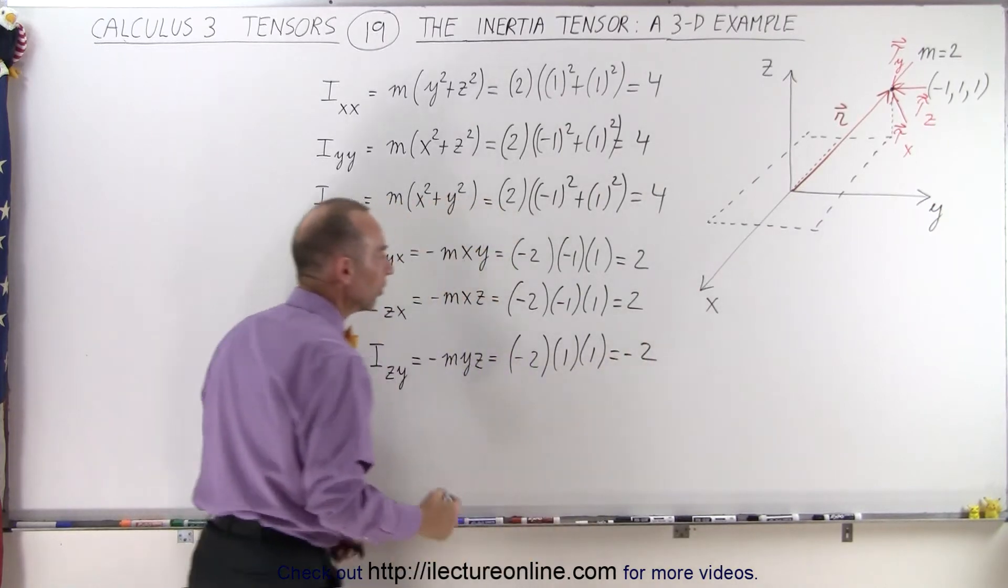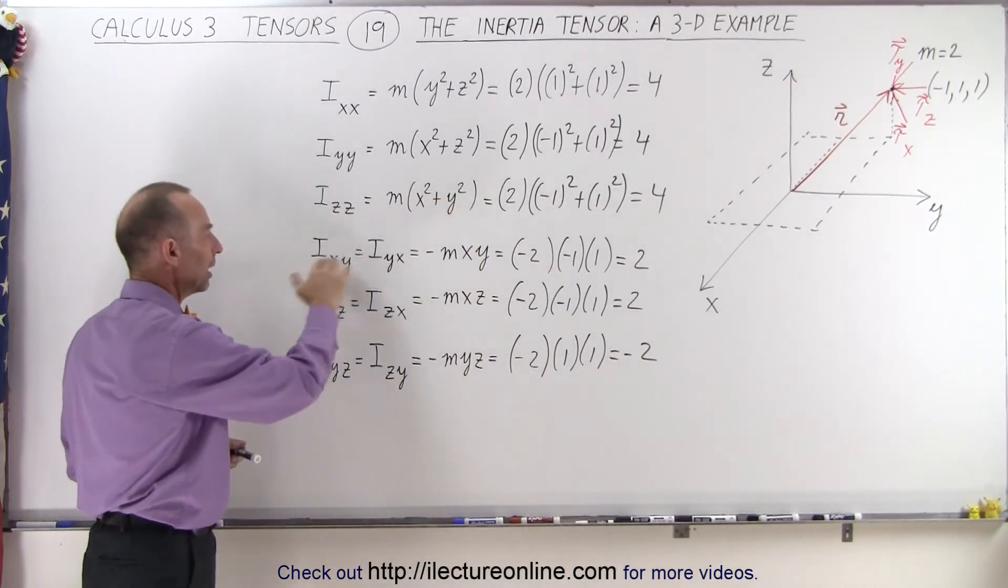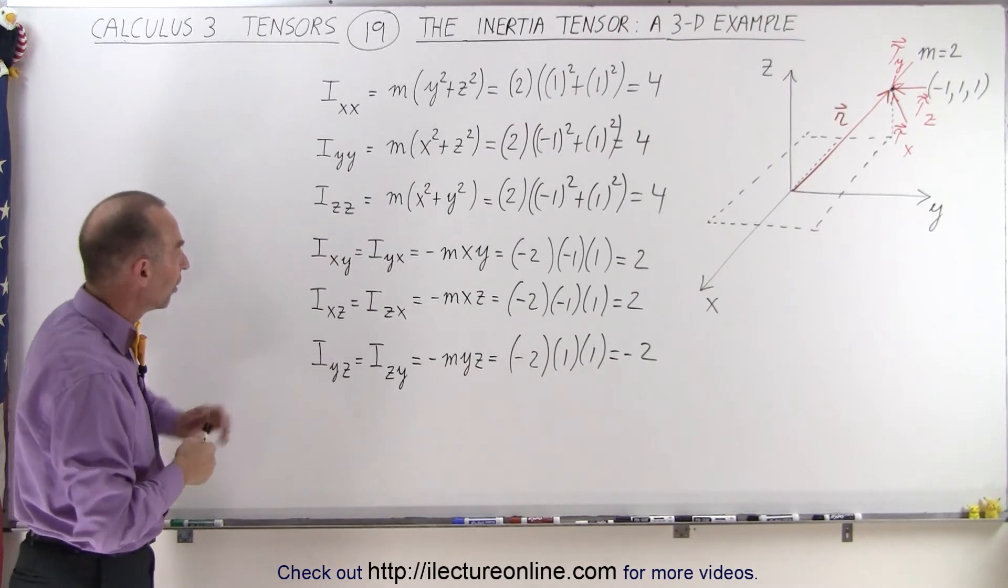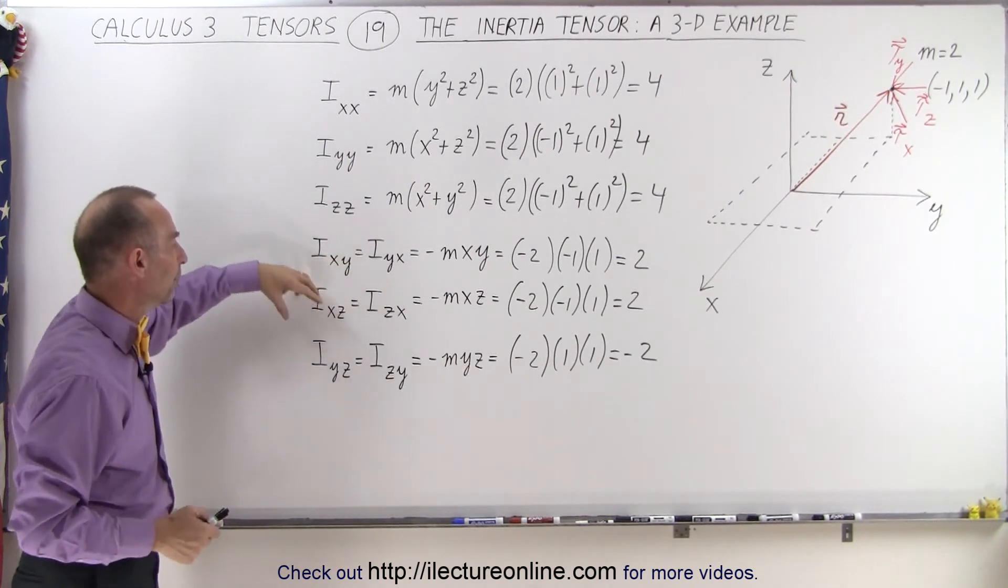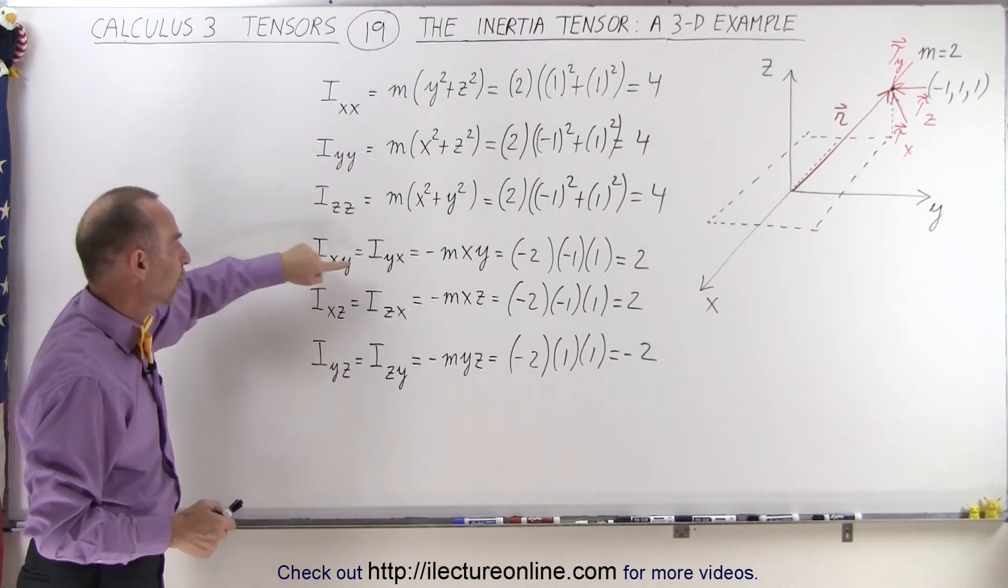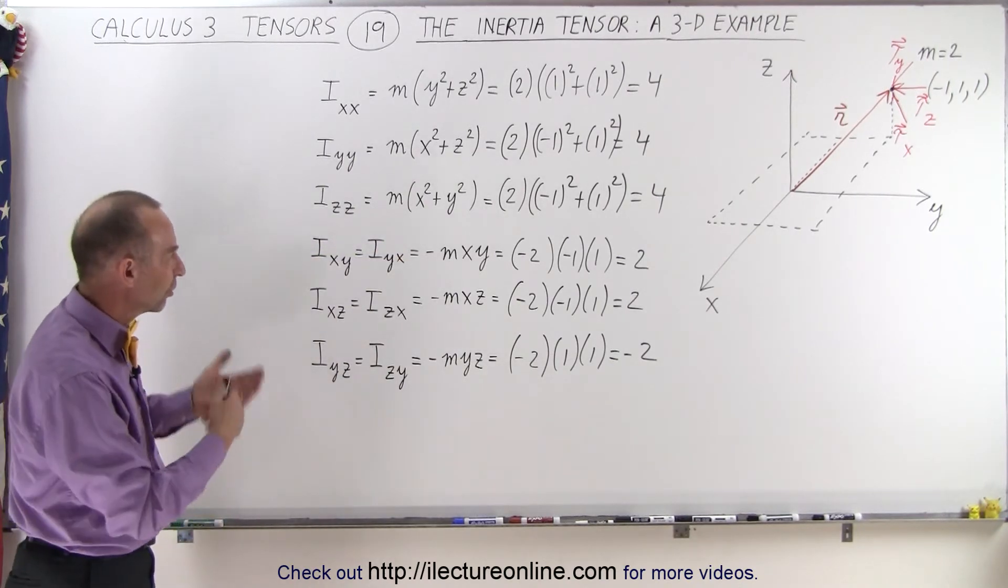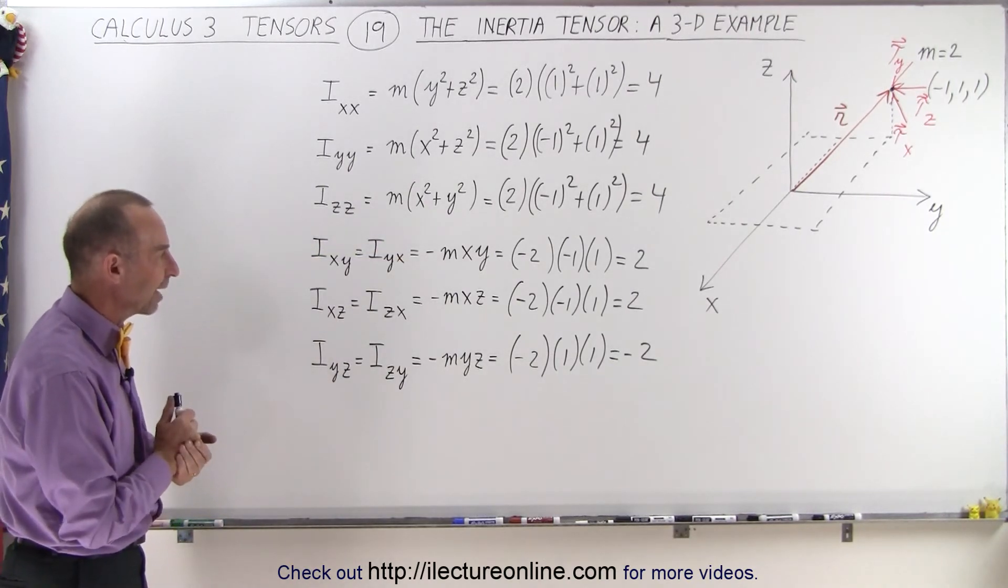Remember that for the off-diagonal elements, we have 2, or actually 3 pairs, 2 that have the same values. That makes it easier. We only have to do this calculation 6 times instead of 9 times.